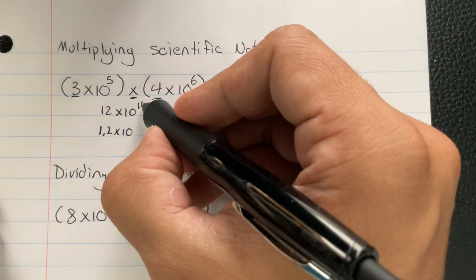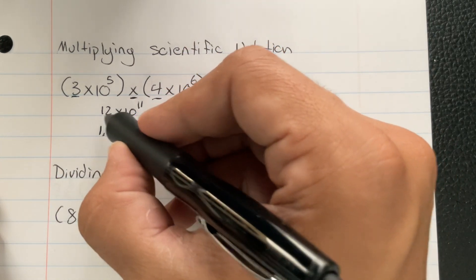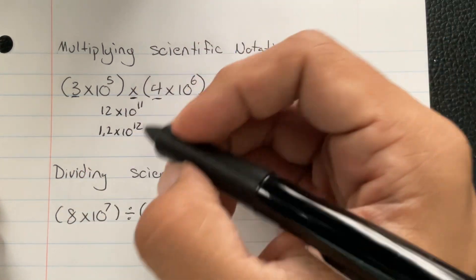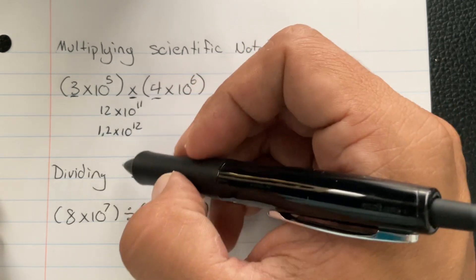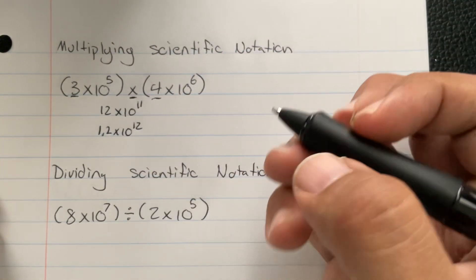Now, because we moved one extra time, this causes it to be 12. That doesn't happen every time, but it does happen when this number ends up larger than 10, or 10 and larger.